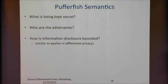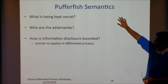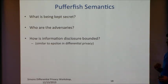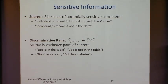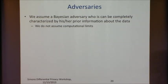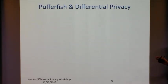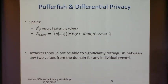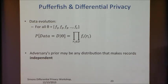There's been a bunch of work on how to make assumptions and come up with alternate models for privacy. The idea is to specify clearly what is being kept secret, who your adversaries are, and how information disclosure is bounded. You can define secrets in terms of which pairs of statements you want to hide from the adversary — for instance, that an individual's record is in the database and has cancer, versus not being in the database. Differential privacy is just an instantiation of such a framework where the adversary's prior is any distribution that makes the records independent.